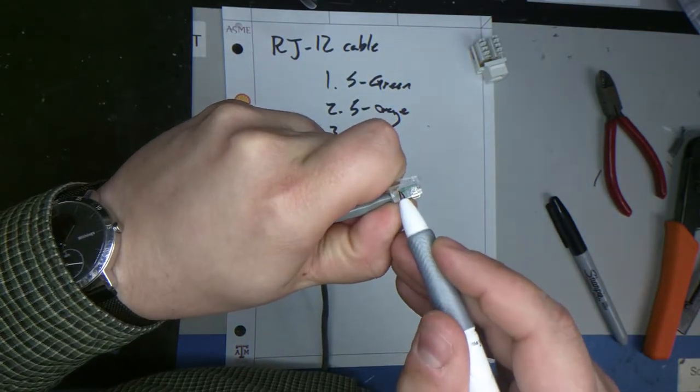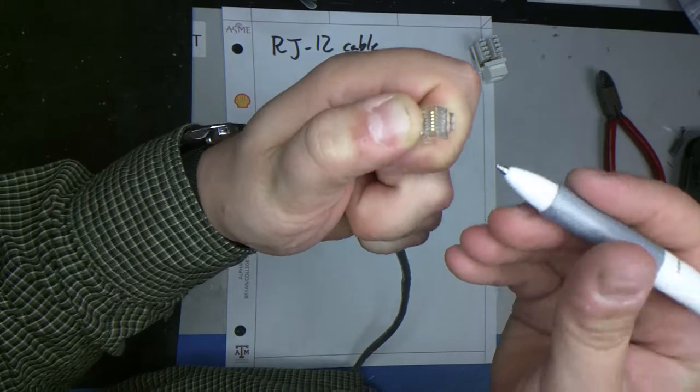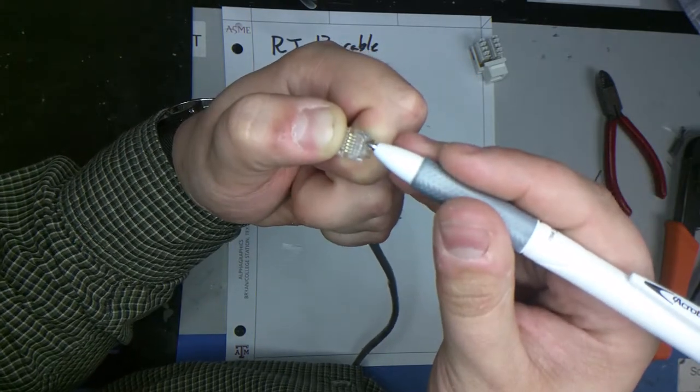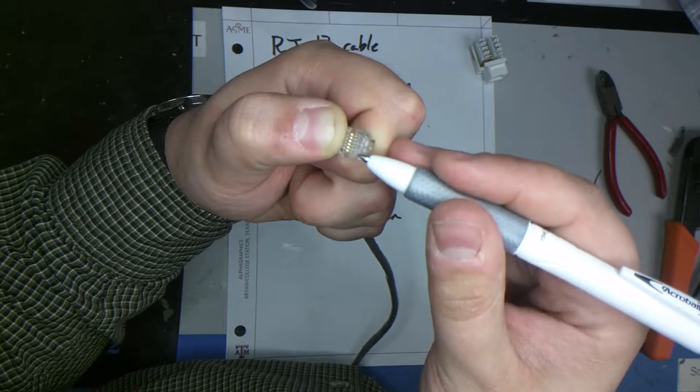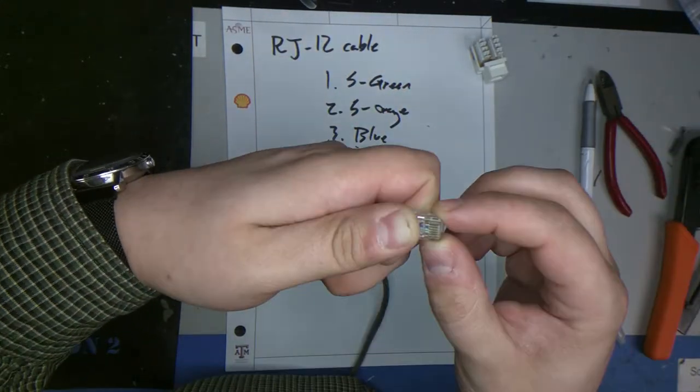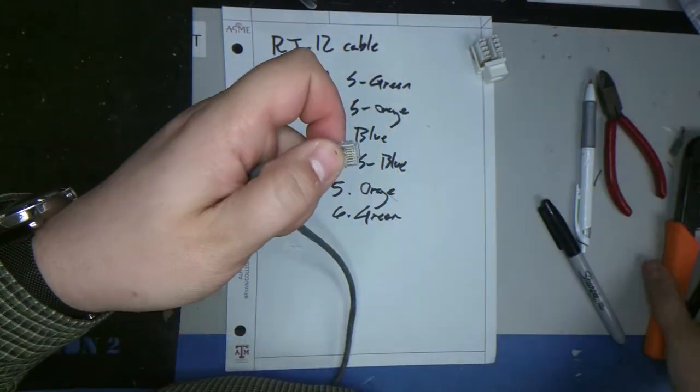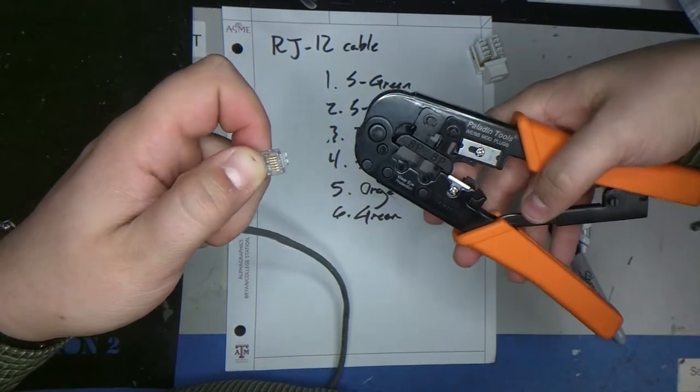And then on this side, the green wire is in all the way. You can kind of verify it by looking at the tip of this. And all the wires are pressed nice and flat right up against the edge of the plastic. So you want to kind of hold that in place. Then use your cool little tool.